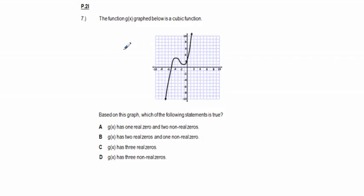Problem 7: the function g(x) graphed below is a cubic function. Which statement is true? Answer D is not correct — you must have at least one real zero touching the x-axis. Answer C says three real zeros, but we can only see one zero on the left. Answer B (two real zeros, one non-real) is possible, but answer A — one real zero and two non-real zeros — is correct because the function only crosses the x-axis once.